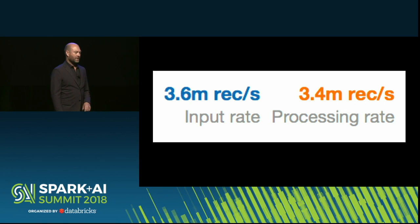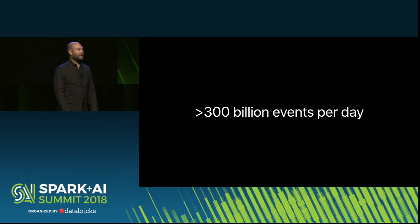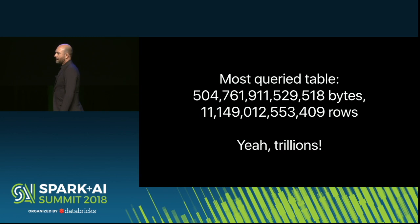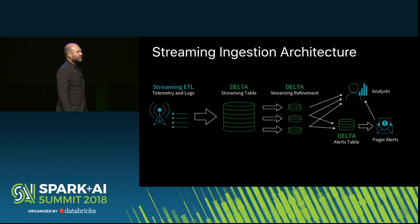Our ETL system does on average about three and a half million events a second, over 100 terabytes of new data a day, over 300 billion events a day. Our most queried table is a half petabyte and growing fast — 11 trillion rows. And this is one of the first places that people go to answer questions, look for things, or validate that a detection might be real.